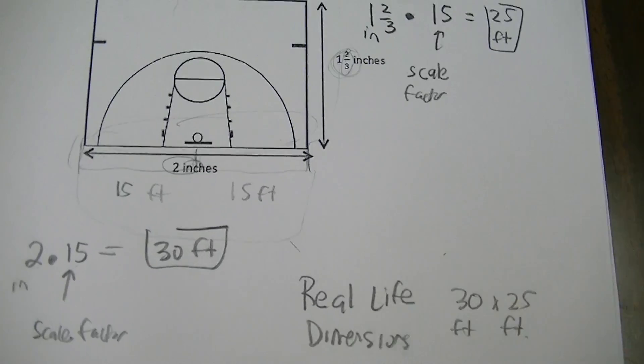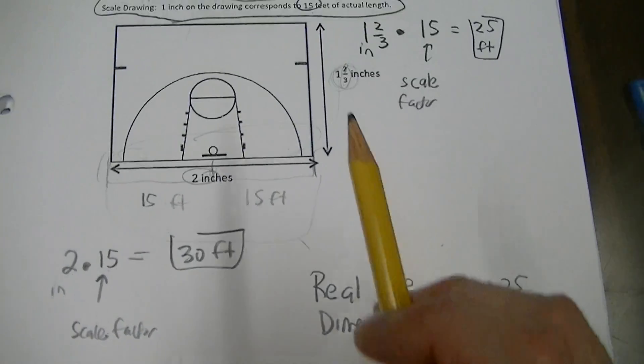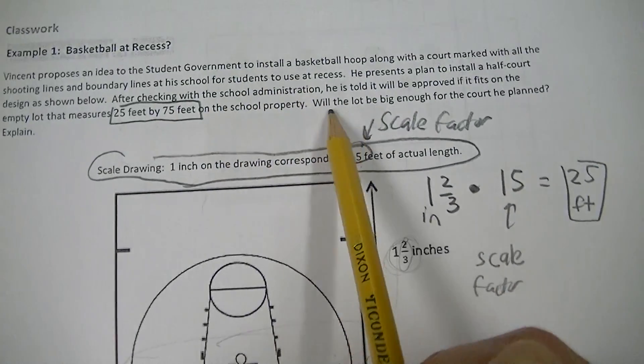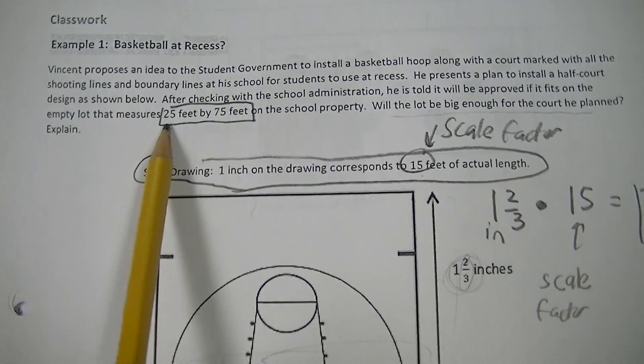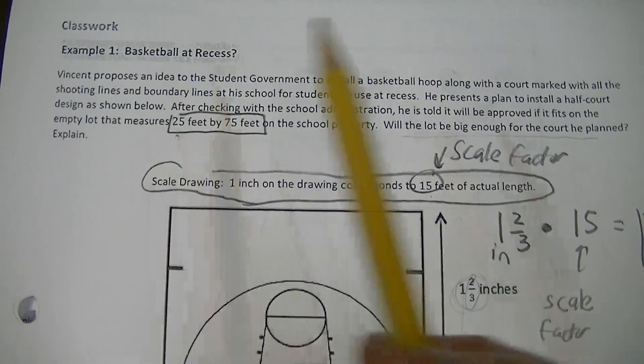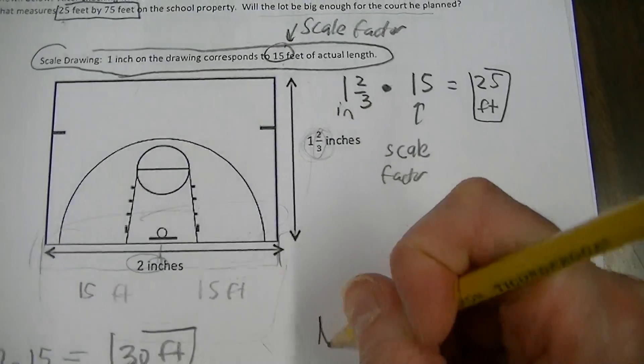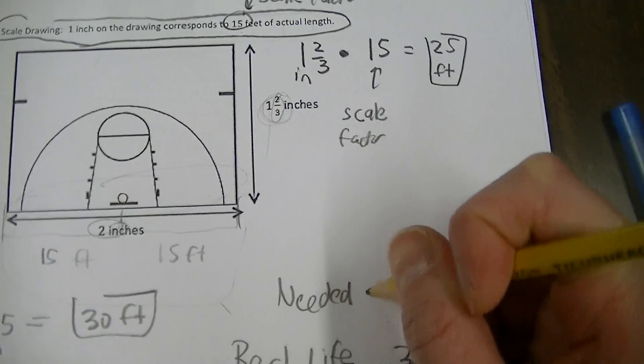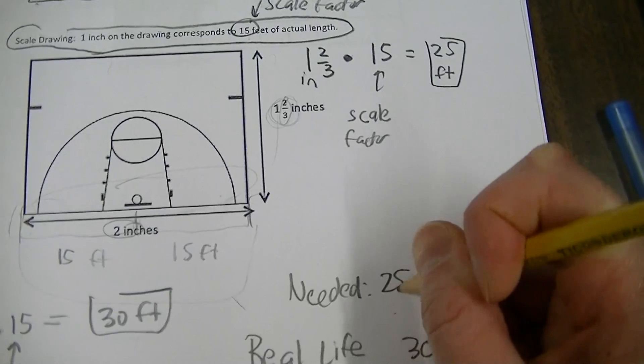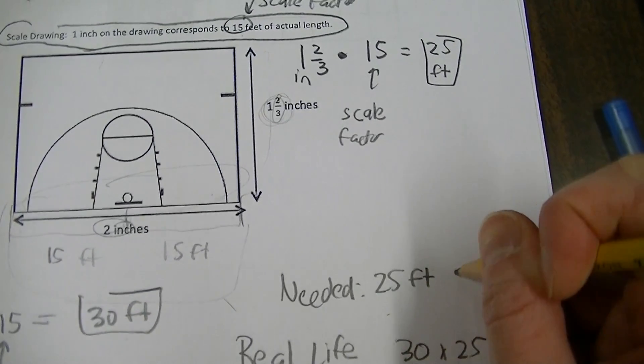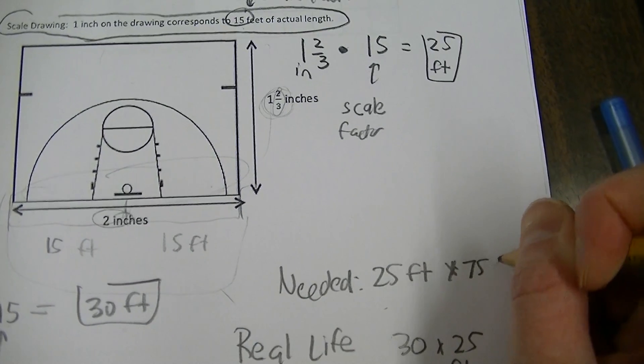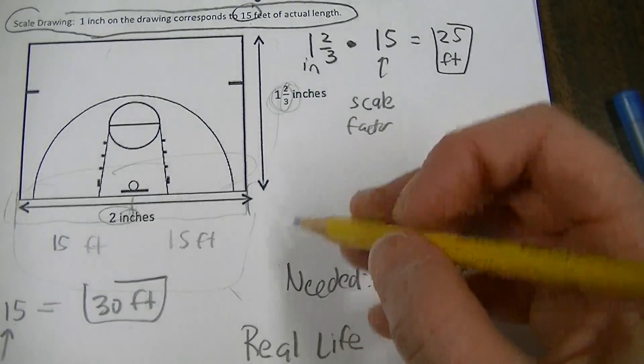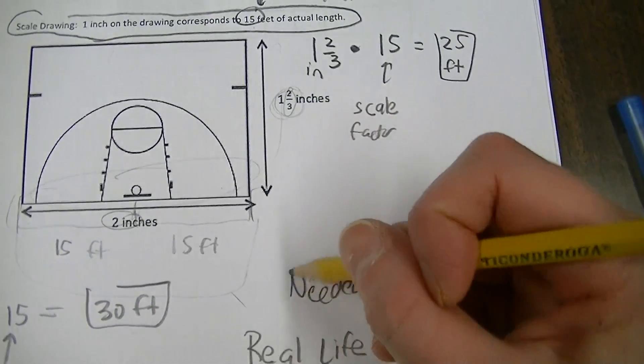Okay, but we're not quite done. Because it says right here, will the lot be big enough for the court he planned? They had to work with 25 feet by 75 feet. So what was needed was 25 feet by 75 feet. Not necessarily needed, but possibility.